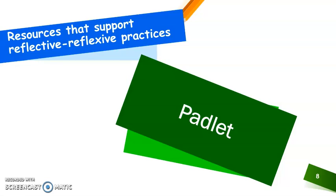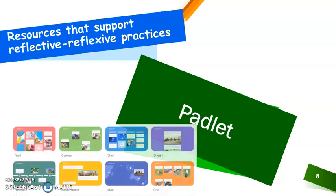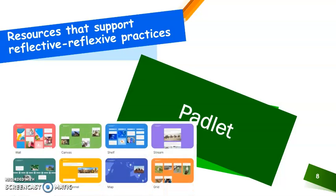Padlet is an online bulletin board in which a variety of post types may be added, creating a way for reflecting to become more collaborative. It provides a choice between eight different organizational types, which include random, timeline, stream, or shelf, and provides leverage to display learning processes in multiple formats such as graphic, text, videos, animation, or audio. Allowing students to create reflective Padlet walls where many sources can be incorporated has the potential to make them more reflective through means beyond reflective writing.